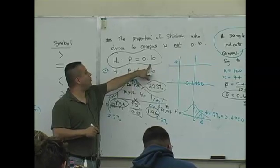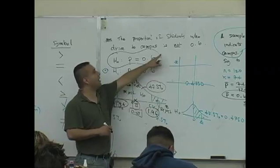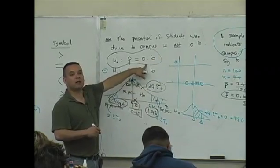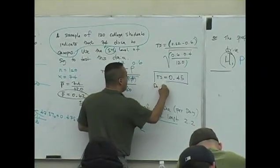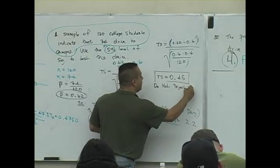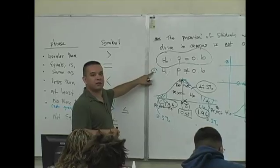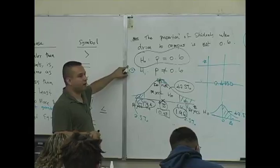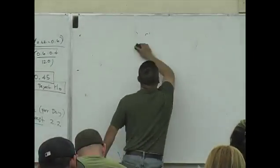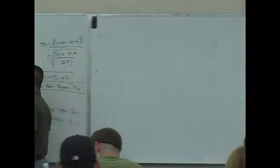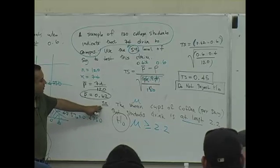Based on this sample, the sample supports — or actually counters — the claim. The claim is that the true proportion is not 0.6, but the sample indicates that the proportion is 0.6. So we are not rejecting the null. Your conclusion would be: do not reject the null. The next example we're going to look at is the mean cups of coffee per day that students drink, which is at least 2.2.